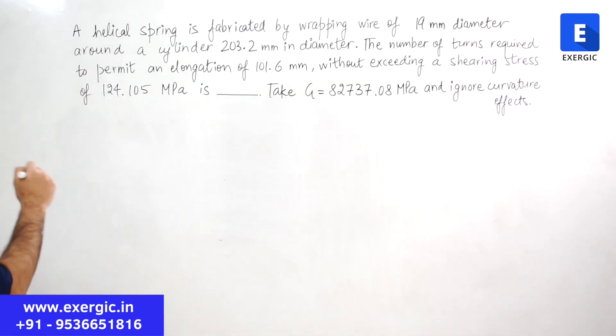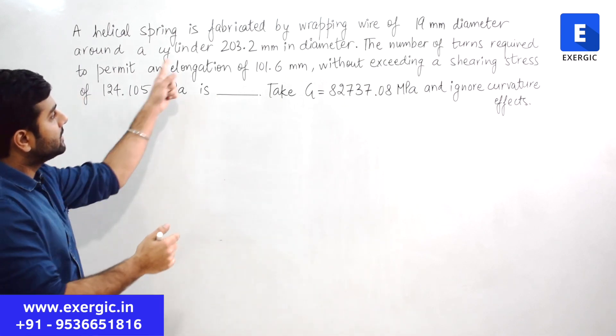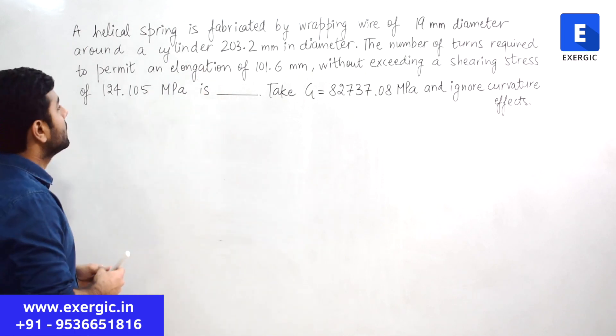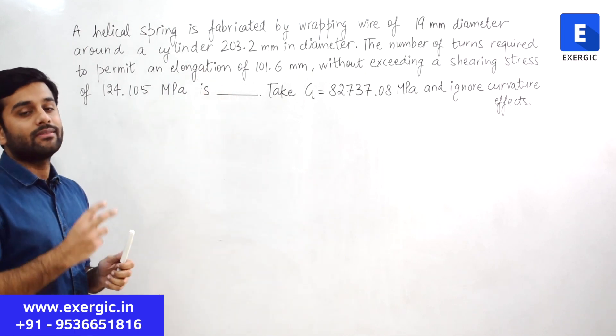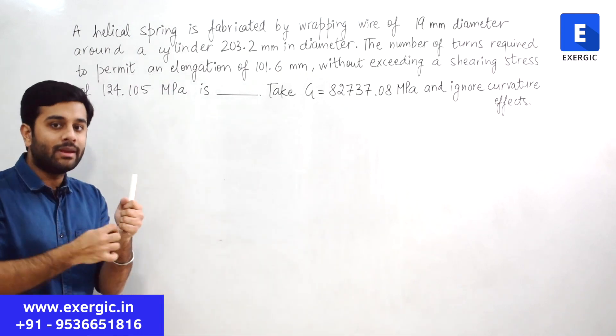Question says that a helical spring is fabricated by wrapping wire of 19 mm diameter around a cylinder of this much mm in diameter. This question is talking about fabricating, means making a spring and how the spring is getting made.